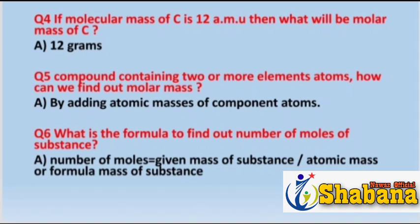Question number five: for a compound containing two or more elements or atoms — such as H₂O or NH₃ — how can we find the molar mass? For compounds with different elements like nitrogen, hydrogen, carbon and oxygen, the molar mass is found by adding the atomic masses of all the component atoms in the formula.